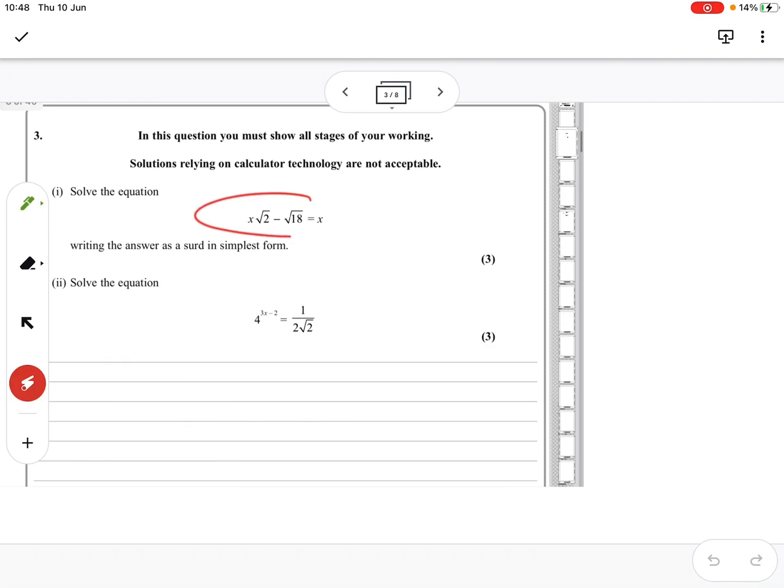You've basically got an equation in terms of X. You need to solve it. First thing I would do is take X away and stick the 18 on the other side. So possibly that's two steps. Then I'm going to take X out as a factor, and then I'm going to divide by root 2 minus 1.